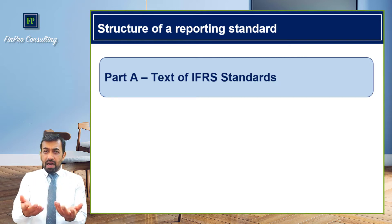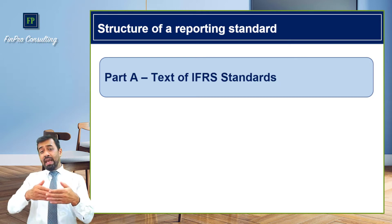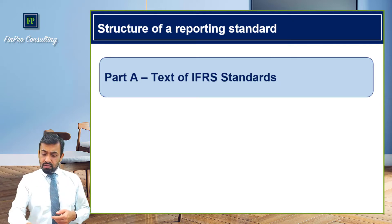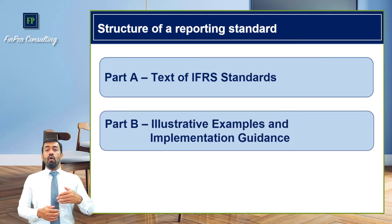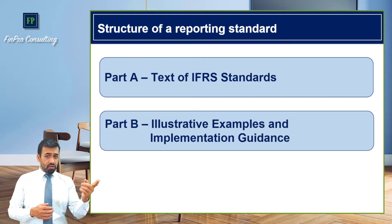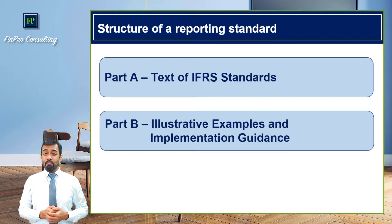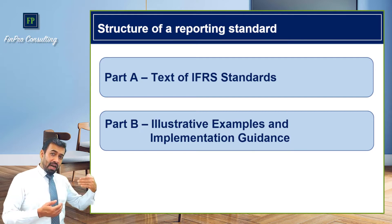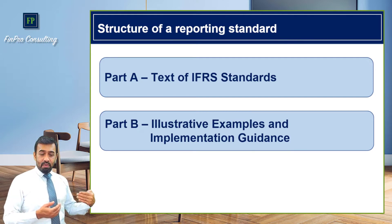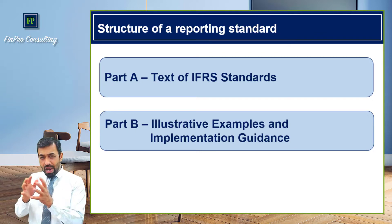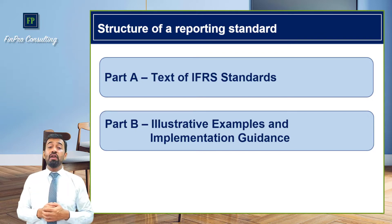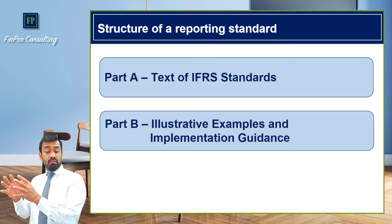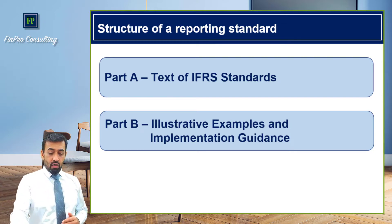How do we interpret an accounting standard? Whenever any reference book provides an interpretation, it is not the author's own interpretation — interpretations are also part of the accounting standard. Part B is the illustrative examples and implementation guidance. Any particular provision is explained by way of an illustrative example, and implementation guidance explains how to apply that provision from Part A. These two parts are extremely important for understanding how to implement a standard.